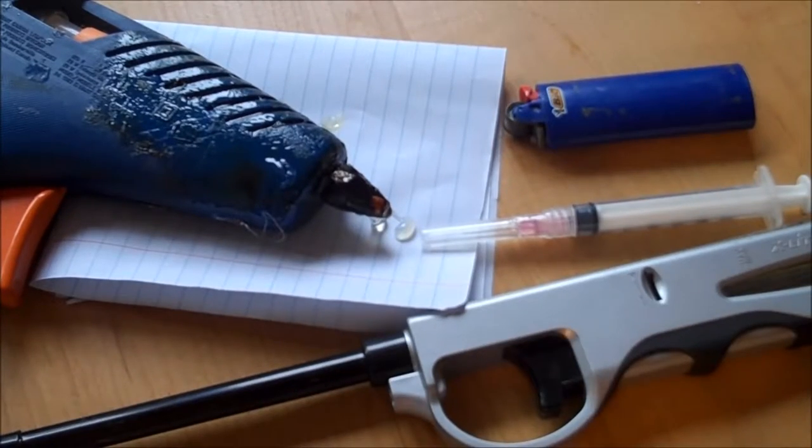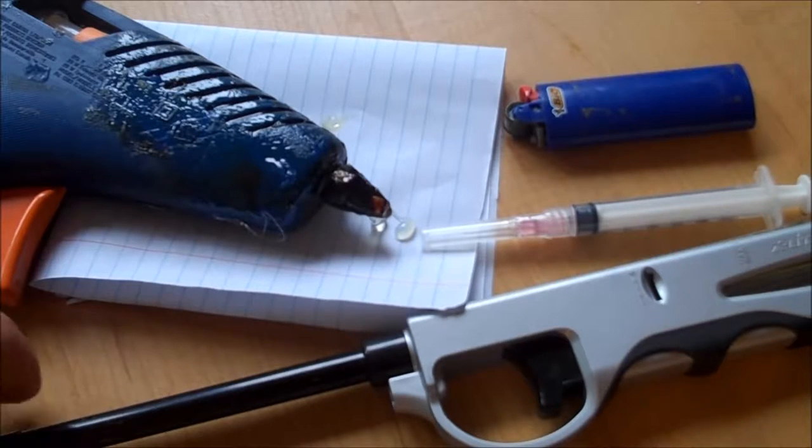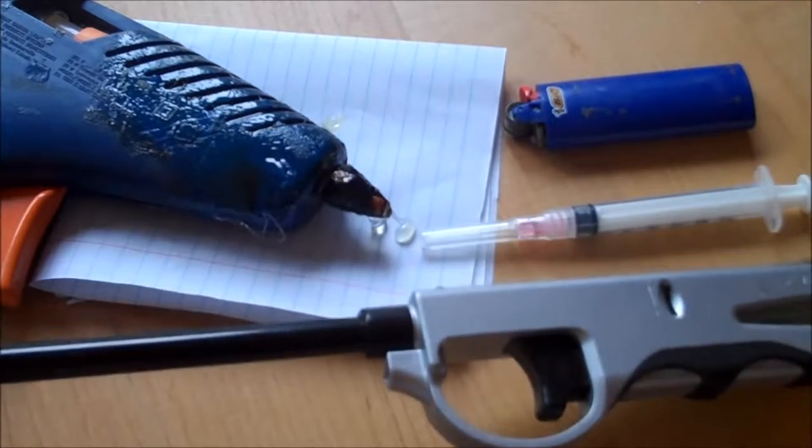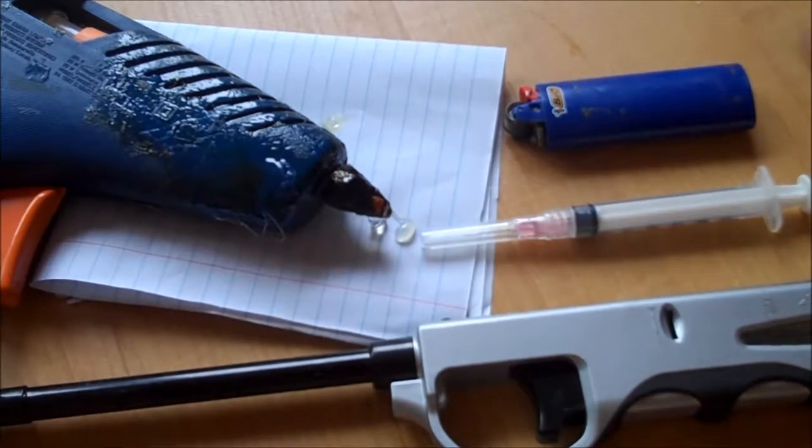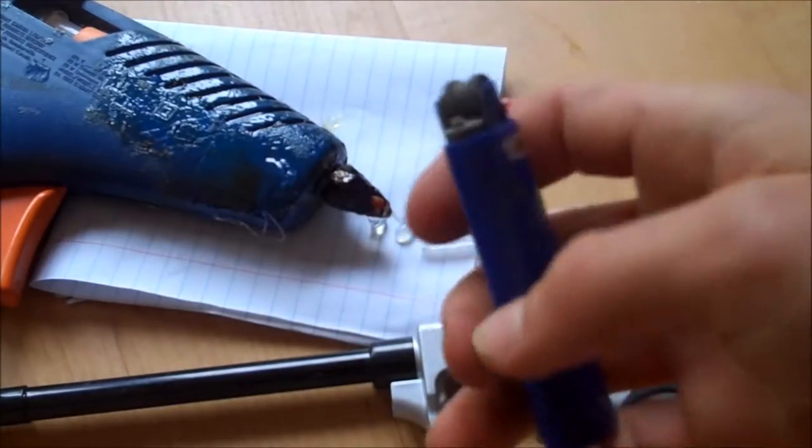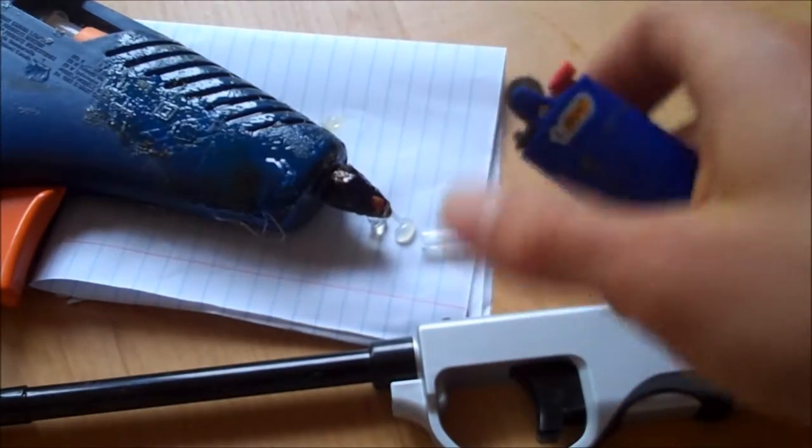All you're going to need for this project is four household items. You're going to need a barbecue lighter that you can take apart. It will have to have gas in it. A little lighter like this cigarette lighter. Mine is missing the cap, but it doesn't matter.